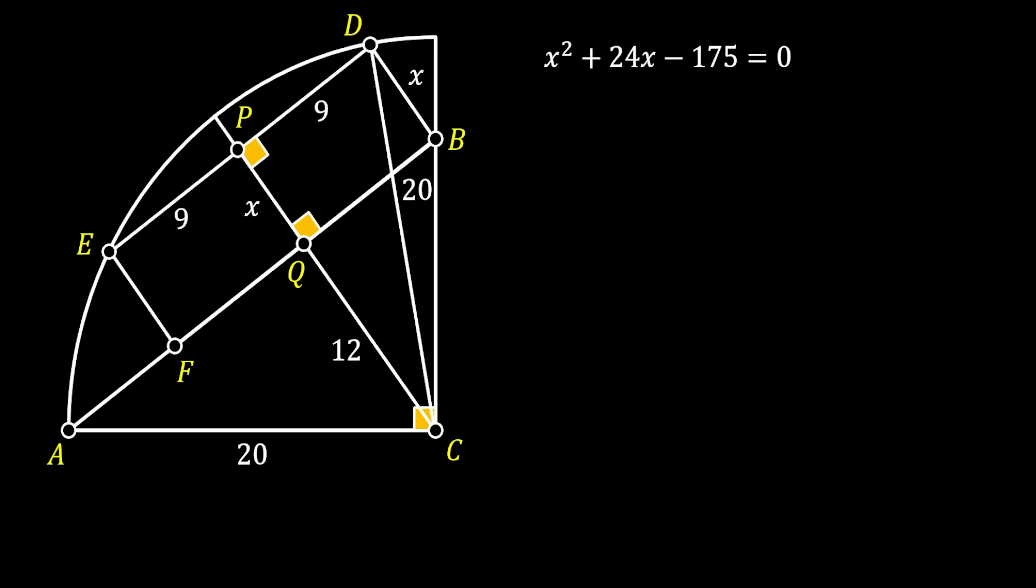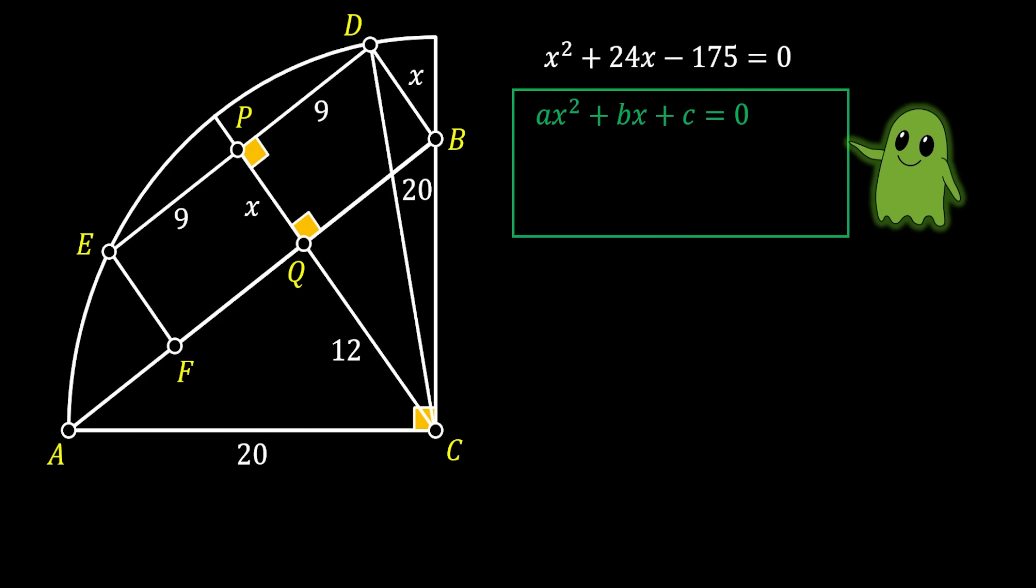Of course, you can use multiple ways to solve this quadratic equation, but in this video, I will use the quadratic formula, which states that if we have a quadratic equation in the form of ax² + bx + c = 0, then we can get the results of x by using the following quadratic formula. Now, of course, from our equation, you can see that the value of a is equal to 1, b is 24, and c is -175.